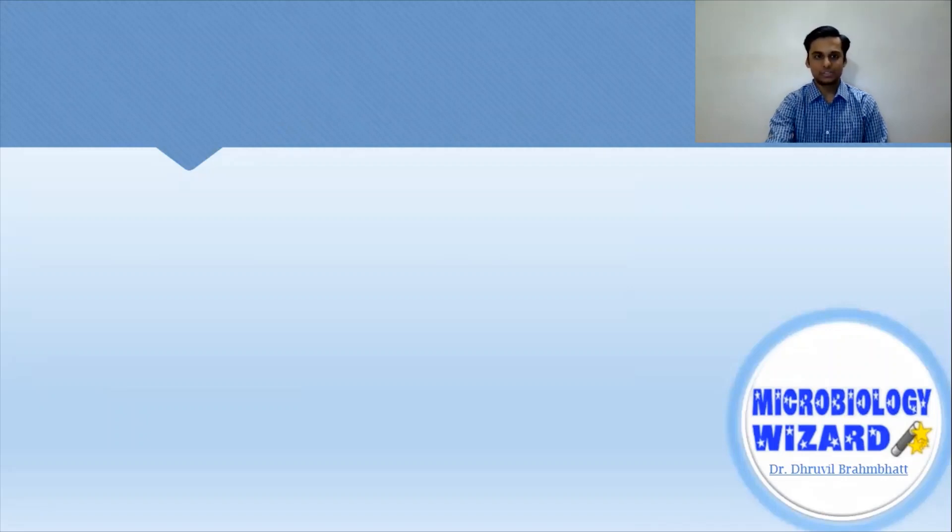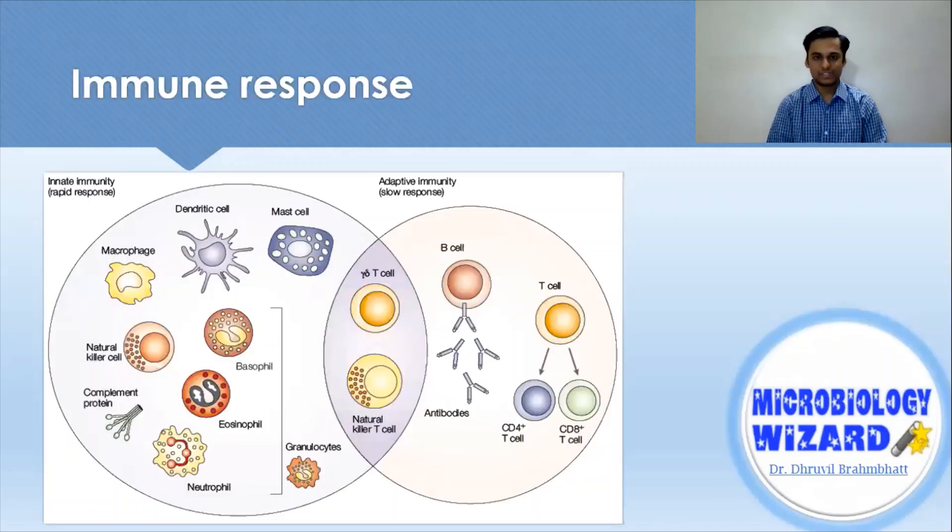Fundamentally, we distinguish these immune responses as innate or non-specific immune response and adaptive or specific immune response. The innate immunity holds the first and second line of defense against the foreign particles and prevents them from entering into our system.